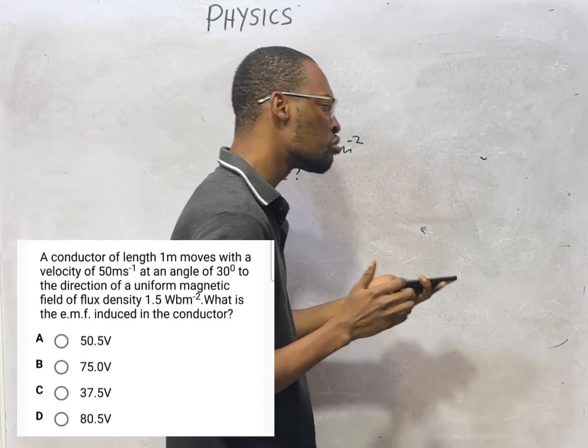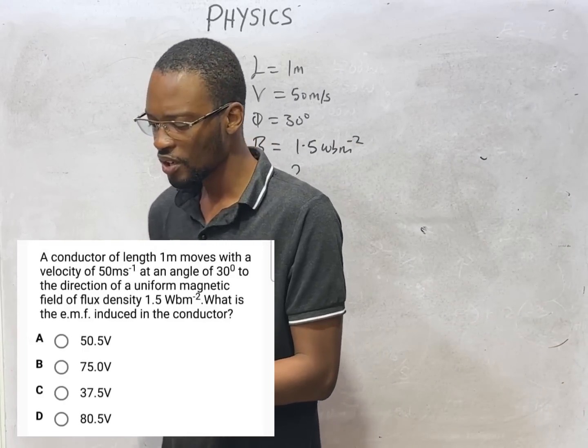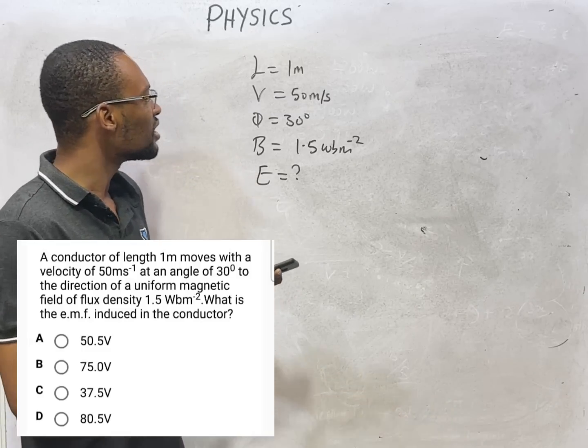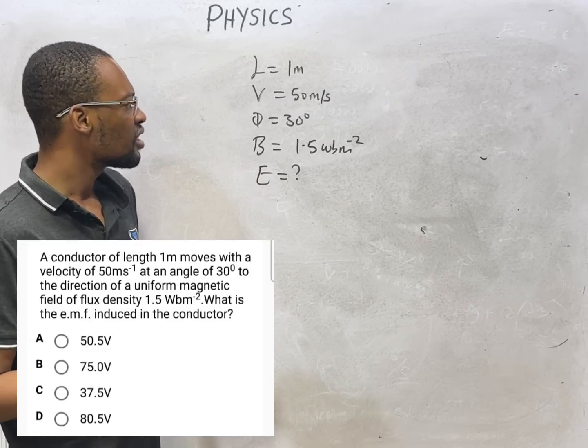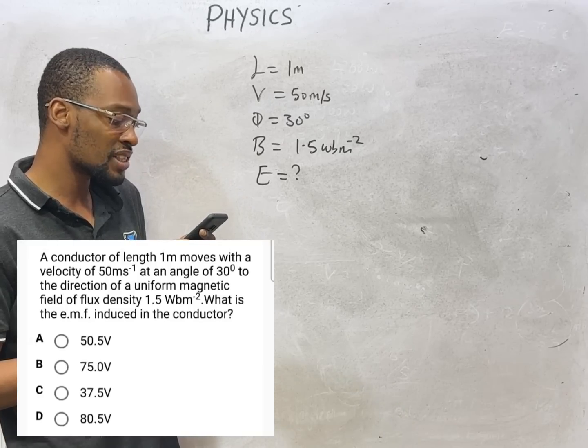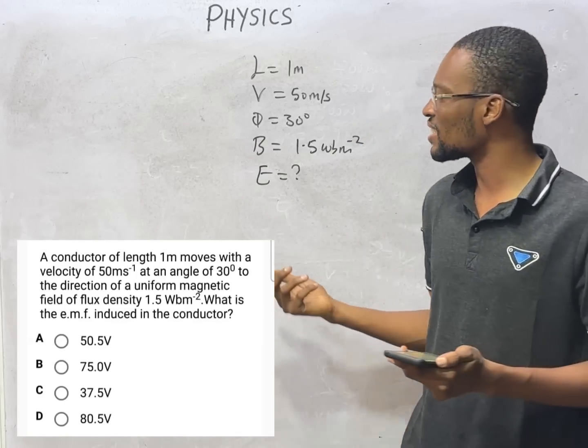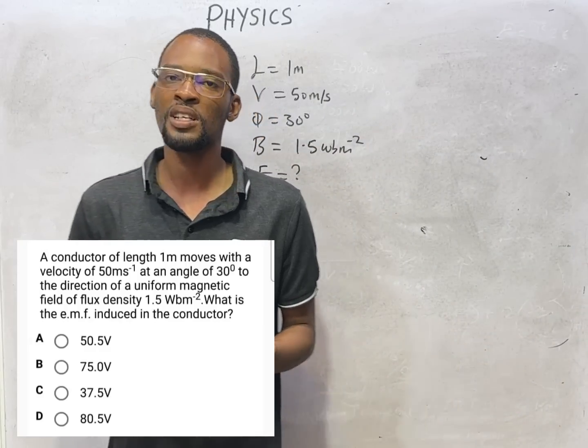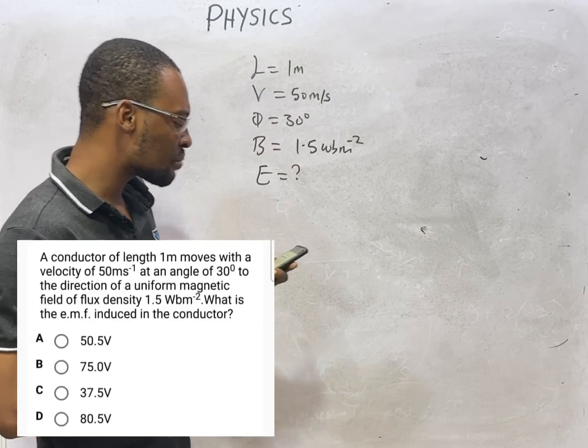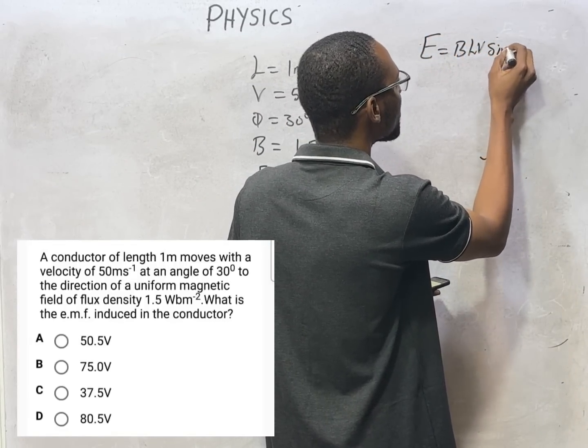When there is relative motion between the conductor and the magnetic field, EMF is induced—it means EMF is produced. So this conductor, they are giving us the length of the conductor, the velocity, the angle, the magnetic flux density of the field, and we're asked to look for the induced EMF. When it comes to questions like this, calculations under magnetism are usually very easy. For this scenario, induced EMF, the formula is very simple: E = BLV sin θ.